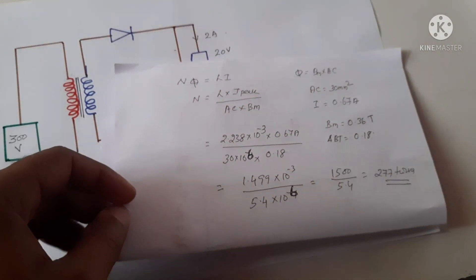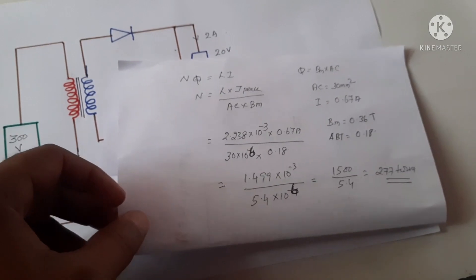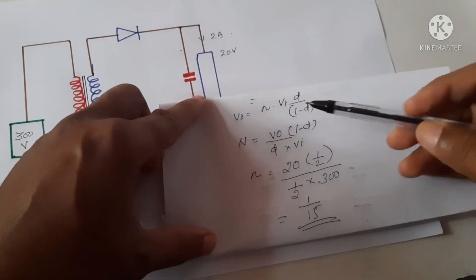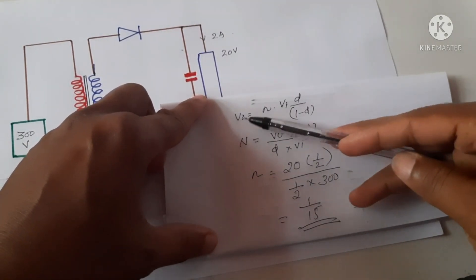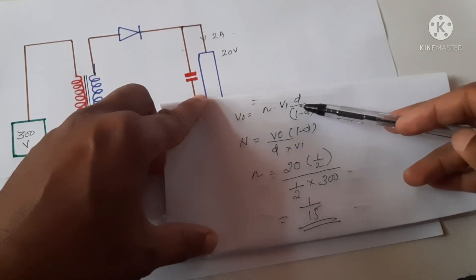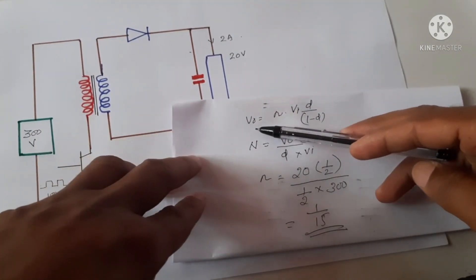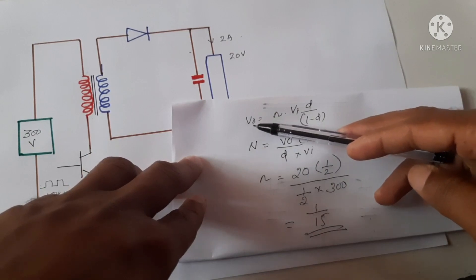Now how do we calculate number of turns in the secondary? In order to get the number of turns in the secondary, we can use the input-output voltage relation for a flyback converter.